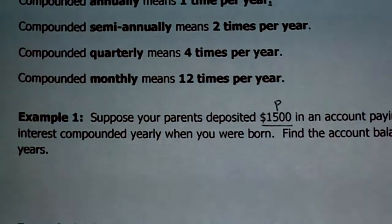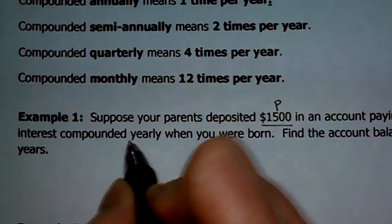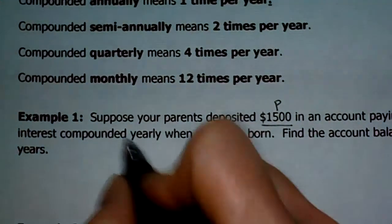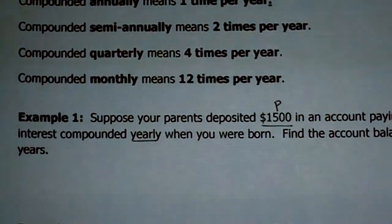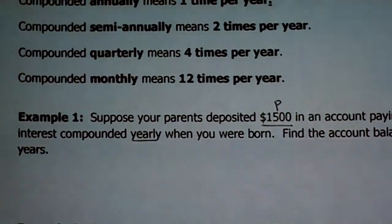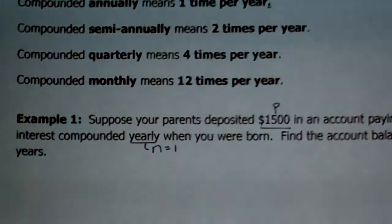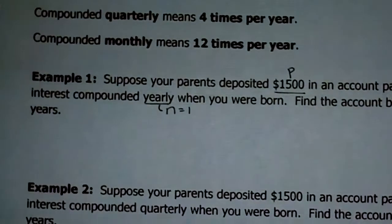The account pays 6.5%. That's R, right? And then it's compounded yearly. So that means one time per year. And let's see, that means N equals one. Again, find the account balance after 18 years. So that's the time that's given. So this will be your time. This is yearly means N equals one. So we do have all the information that we need. So let's plug this all in and see if we can figure it out. I'm sure we can.